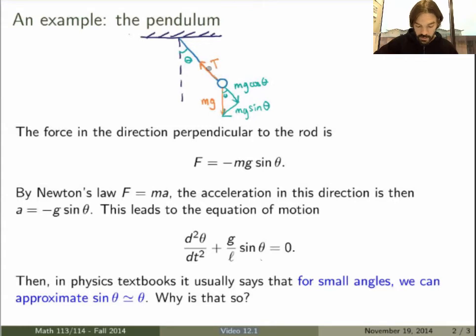It turns out that this part here will cancel the tension because there's no motion in this direction, and all the motion will be in this direction perpendicular to the rod. And it's easy to calculate that the force in this direction, the magnitude of the force is mg sin(θ), and taking the signs into account, the force in the direction perpendicular to the rod will be minus mg sin(θ). Here m is the mass of the pendulum and g is the gravitational acceleration.